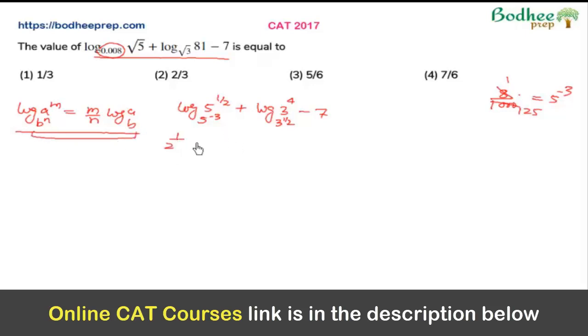So if I apply this particular relation, then the first term will be 1/2 divided by minus 3, which is minus 1/6, times log of 5 with base 5, plus here it will be 4 divided by 1/2, times log of 3 with base 3, minus 7.